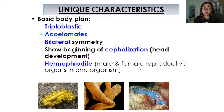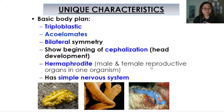Platyhelminthes are also usually hermaphrodites. That means they have both the male and the female reproductive organs in one organism — in Malay this is called 'kunsa'. And they also have a simple nervous system because they are starting to develop a head.